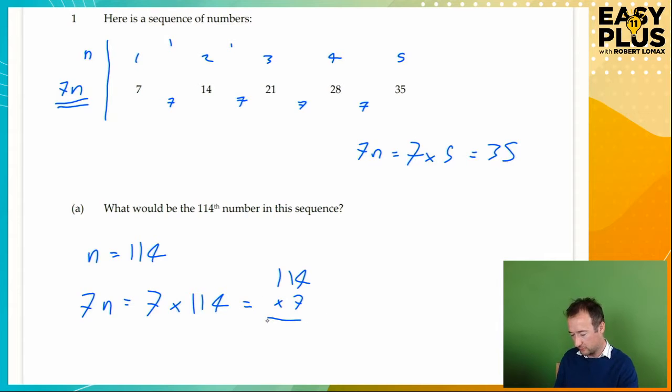I'm not going to expect you to do that in your head. We need to do a quick bit of working out. When you're doing side working out that isn't part of your main row of calculations, stick it well out of the way. 114 times 7. 7 times 4 is 28. 7 times 1 is 7, plus 2 is 9. And 7 times 1 is 7. So you've got 798. And that's our answer.